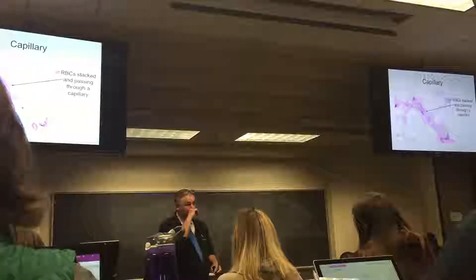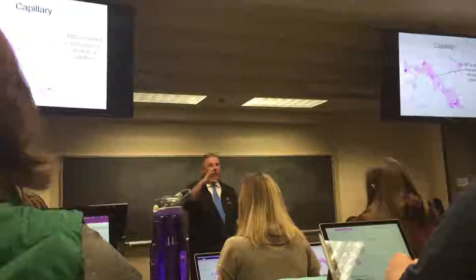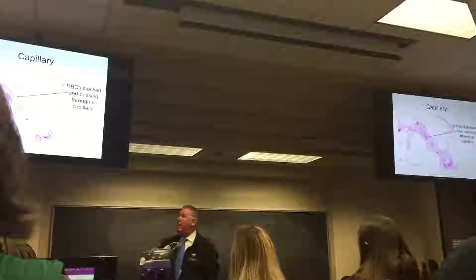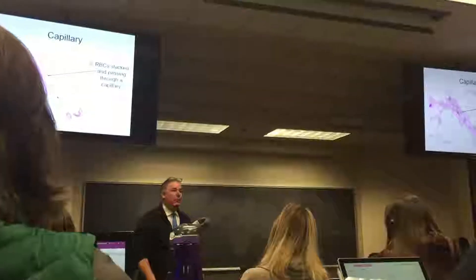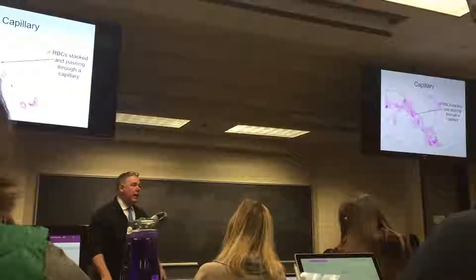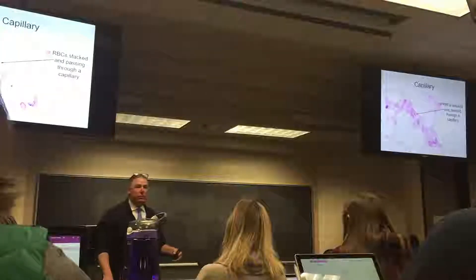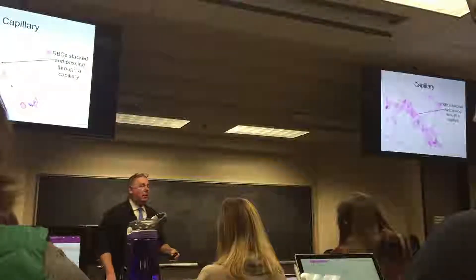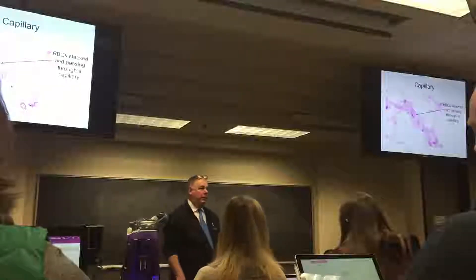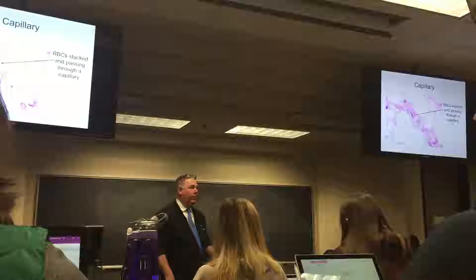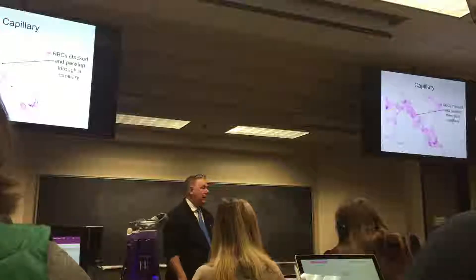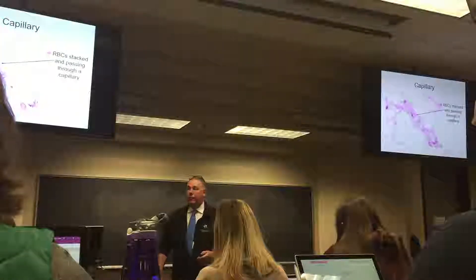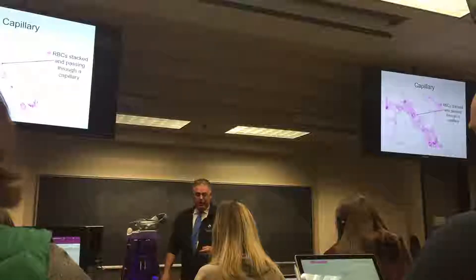We were talking about sickle cell — the cells become like a sickle and get trapped in these capillaries, particularly around joint capsules. This produces downstream hypoxia, which is what produces the joint pain in sickle cell disease. Interestingly, a deer — all of their cells are sickled, yet they don't have the problems with hypoxia that sickle cell patients do.